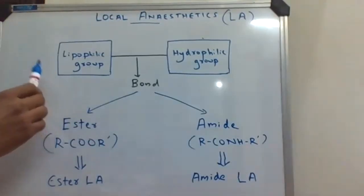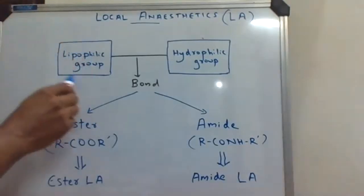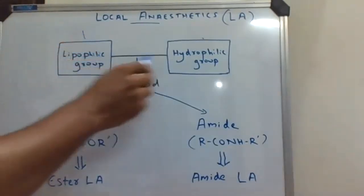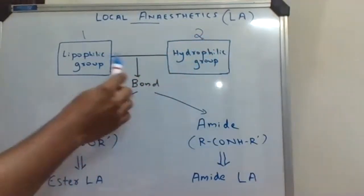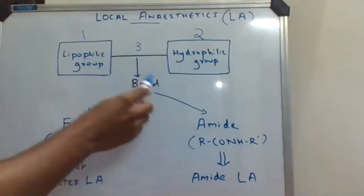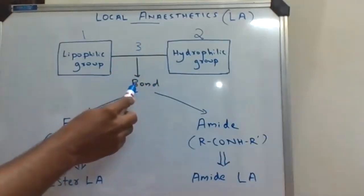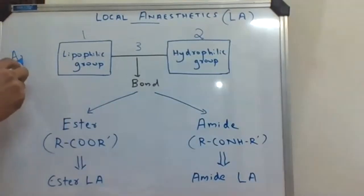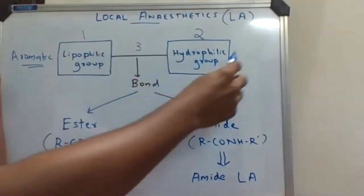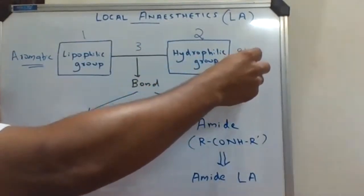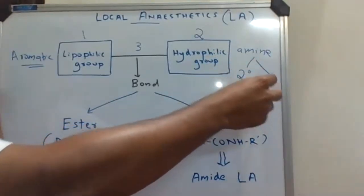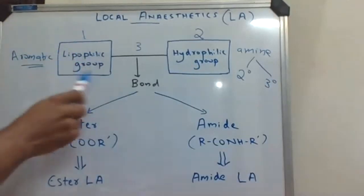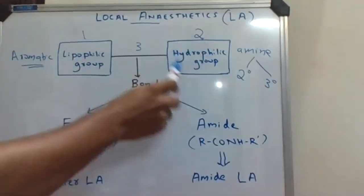Basically, there are three parts for a local anesthetic. There will be a lipophilic group — that is the first part. There will be a hydrophilic group — that is the second part. And this lipophilic group and the hydrophilic group will be connected by the third part, which is an intermediate bond. Now, the lipophilic group will normally be an aromatic residue — aromatic groups. Whereas the hydrophilic group will be mainly amine groups, which could be either a secondary amine or a tertiary amine. So three parts: lipophilic group, hydrophilic group, and the connecting bond.